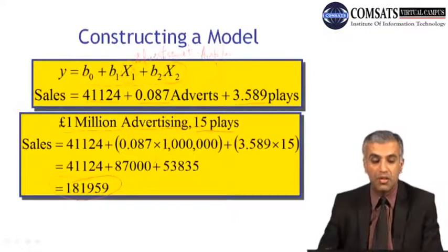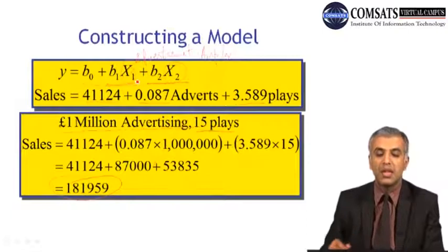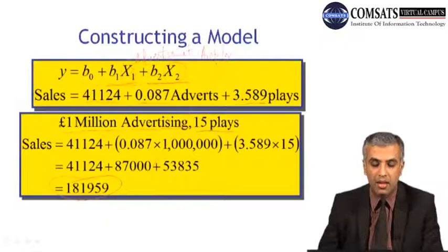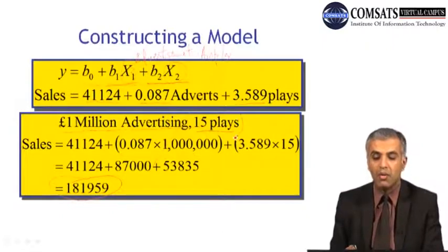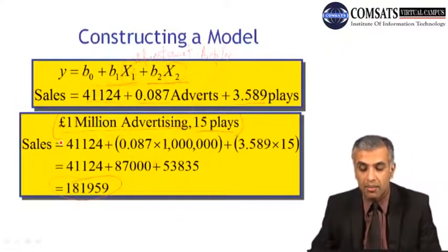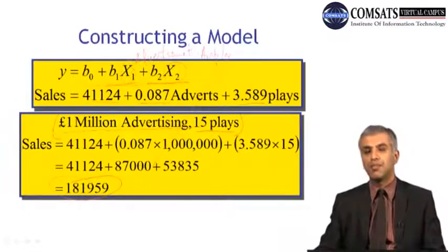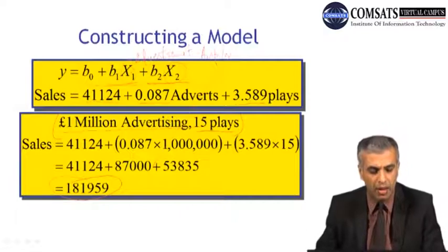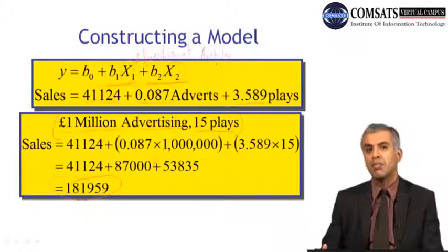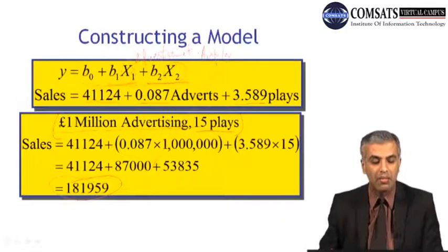We drew the same model discussed before, representing the two variables through their respective regression coefficients, beta 1 and beta 2. Once we have formulated the equation, we can calculate any given amount for advertisement and airplay and predict the sales as well. However, we cannot extrapolate to find values which are outside the minimum and maximum range of the dependent variable. This calculation of the dependent variable is valid only under certain conditions.